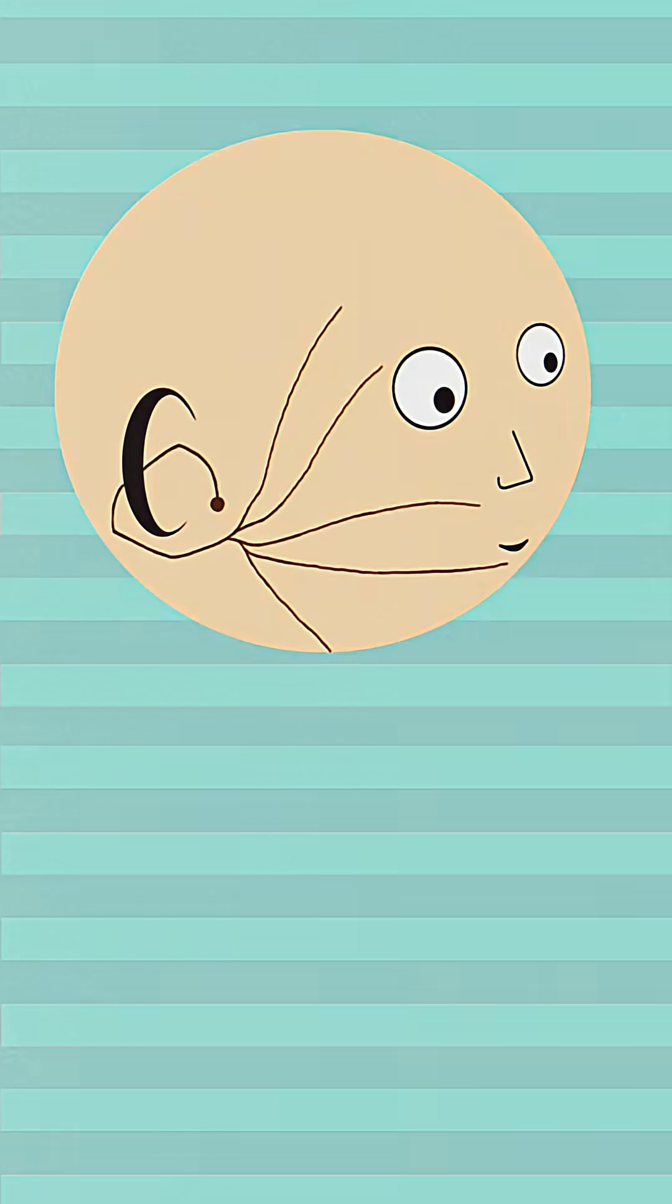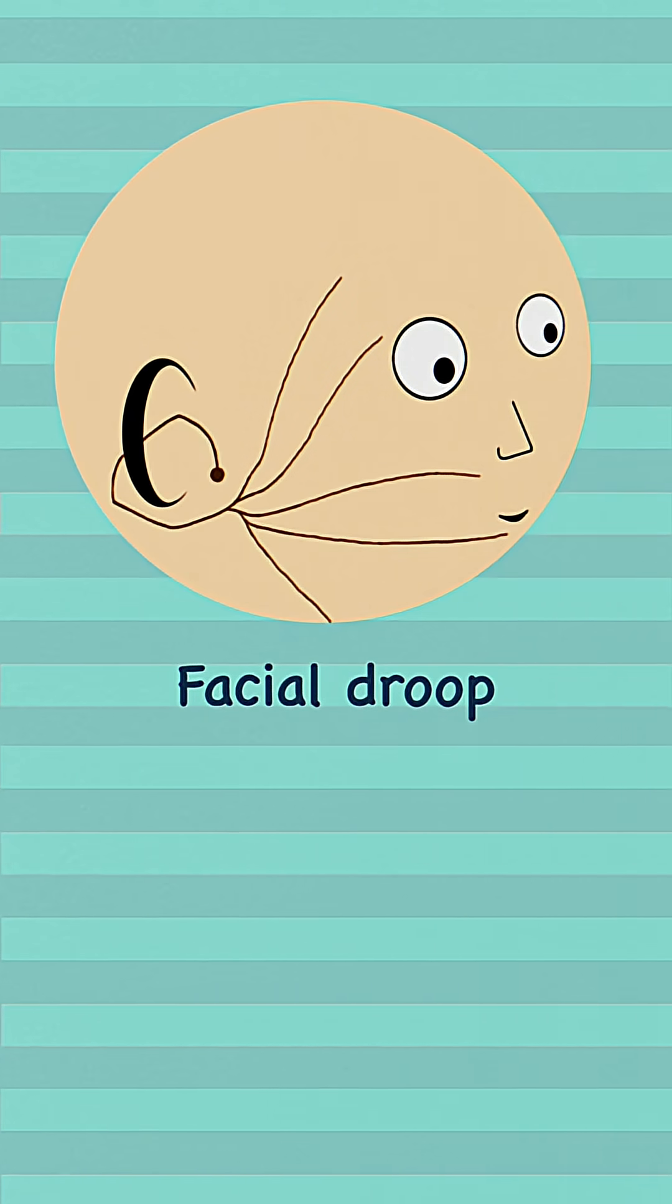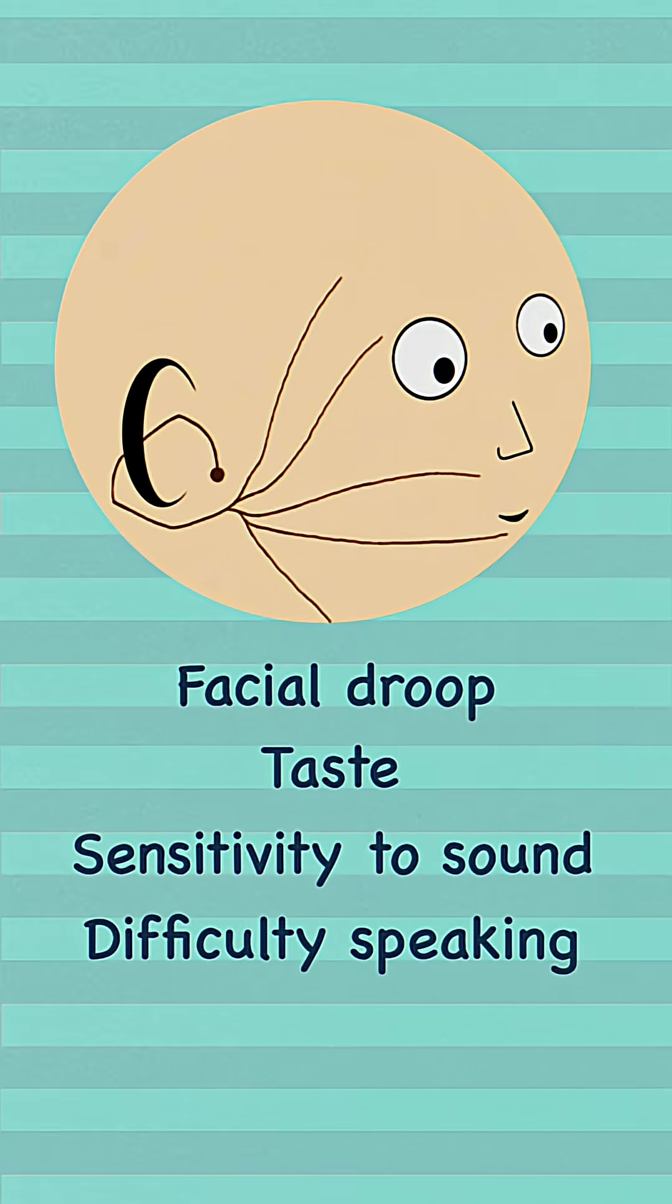Based on the muscles that it innervates, if cranial nerve 7 is affected you can develop a facial droop on one side of the face, changes in your taste, sensitivity to sound, and difficulty speaking because the muscles on one side of the mouth are difficult to move.